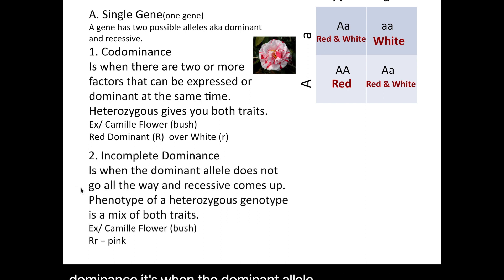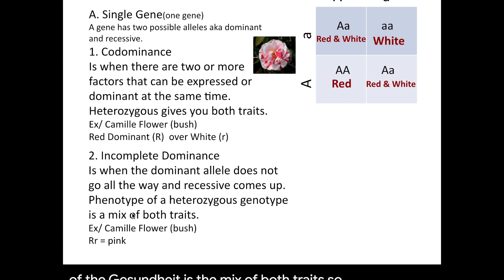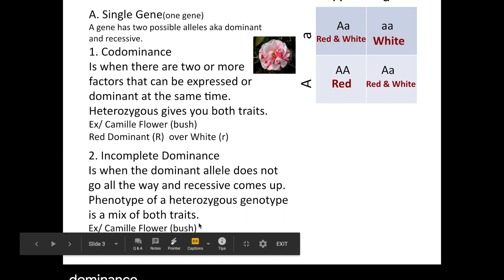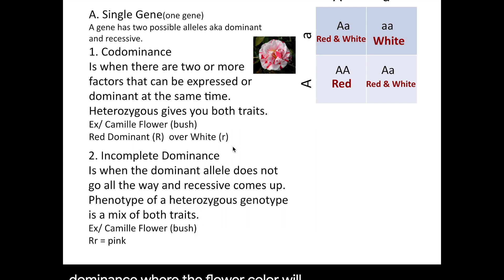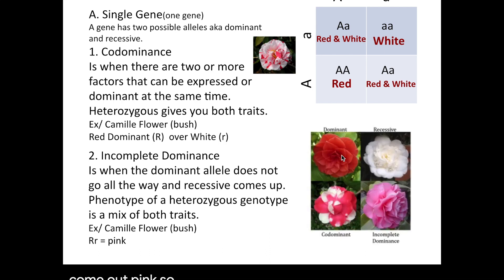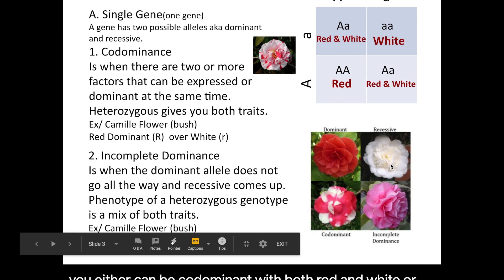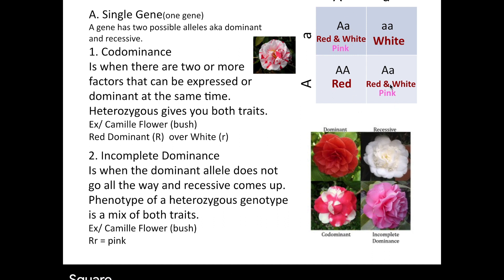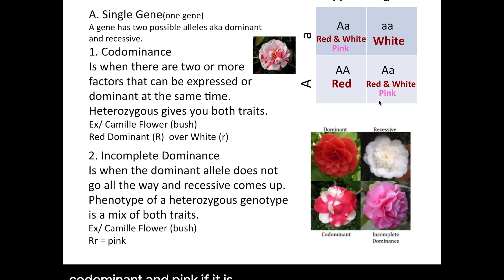For incomplete dominance, it's when the dominant allele does not go all the way and the recessive comes up a bit, so the phenotype of the heterozygous genotype is a mix of both traits — they're partially both phenotypic traits. The Camellia flower is very unique; it can also express incomplete dominance where the flower color will be pink for heterozygous, red for homozygous dominant, and white for homozygous recessive. So the heterozygous can be codominant with both red and white, or incomplete dominant with pink.